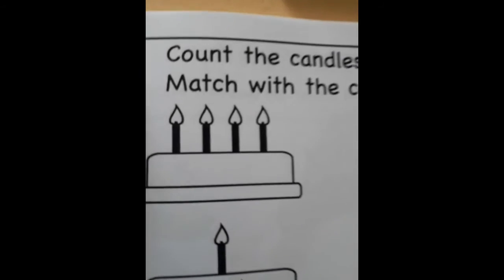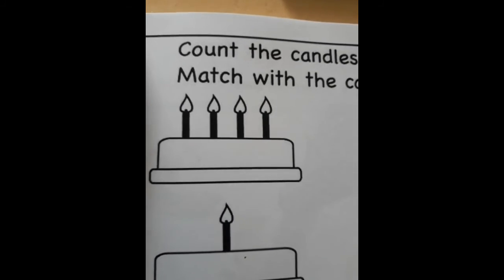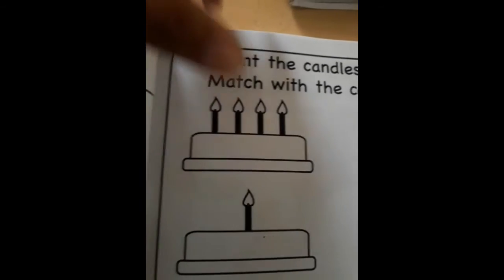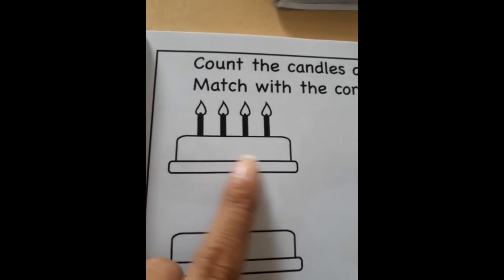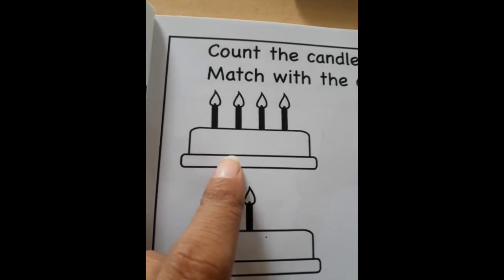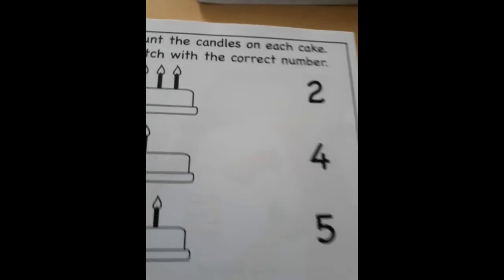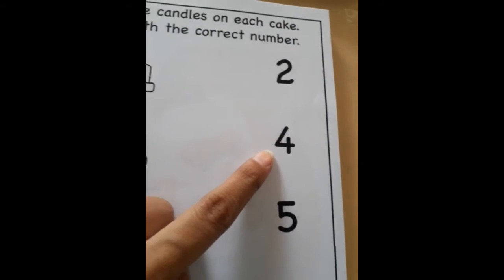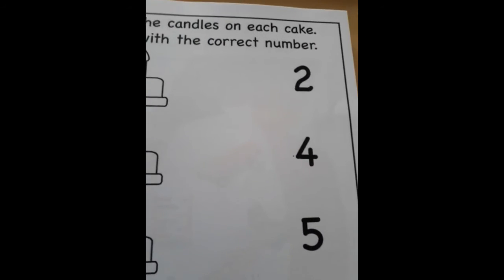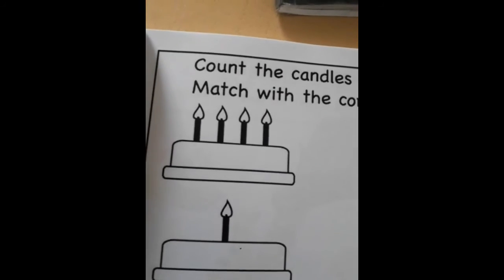Suppose I see the first cake — how many candles are here? Count with me: one, two, three, four. How many candles? Four. Now we have to match this cake with number four. Is this four? No. Is this four? Yes — four is like sitting on a chair. Now you have to match the cake with four candles.